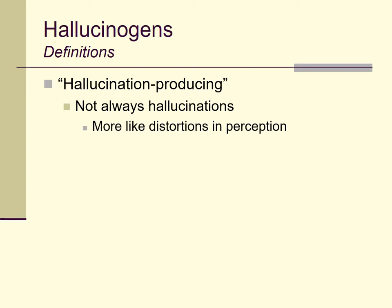Hallucinations mean perceiving things to be there which are not there — seeing something in your presence which isn't there, or hearing a sound which is not coming from anything in your environment. Those would be hallucinations, and what we see more commonly with the hallucinogenic drugs are rather distortions in perception. If you take LSD you don't necessarily see something that doesn't exist; rather you see the things that do exist around you in a somewhat different, somewhat distorted way.